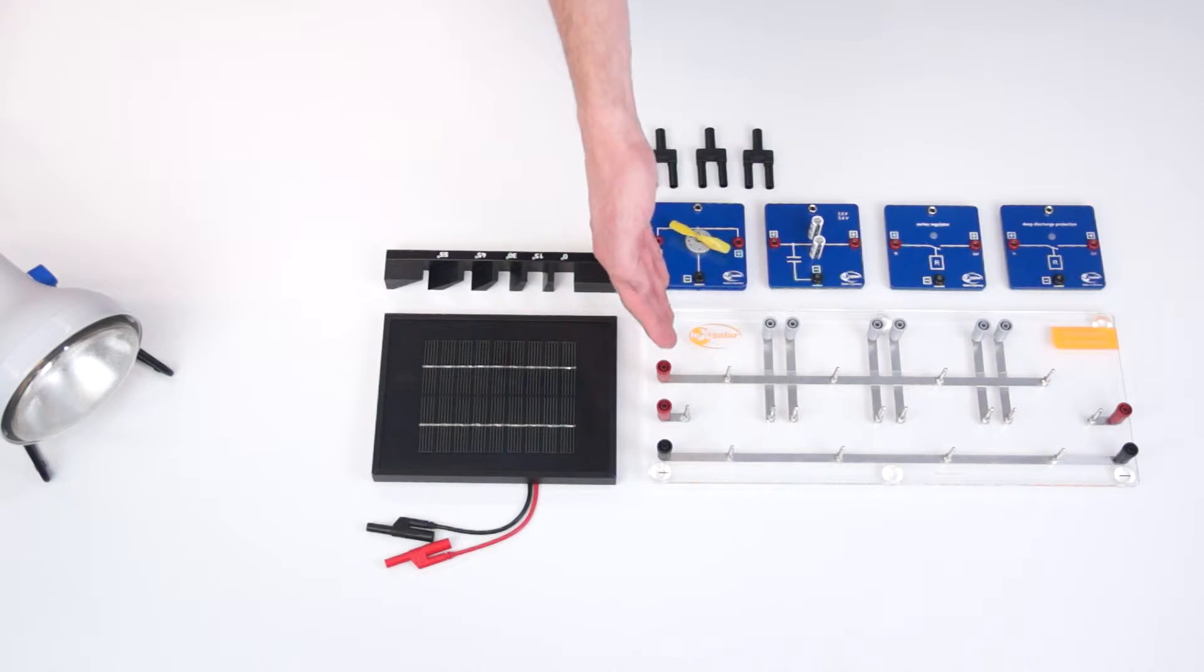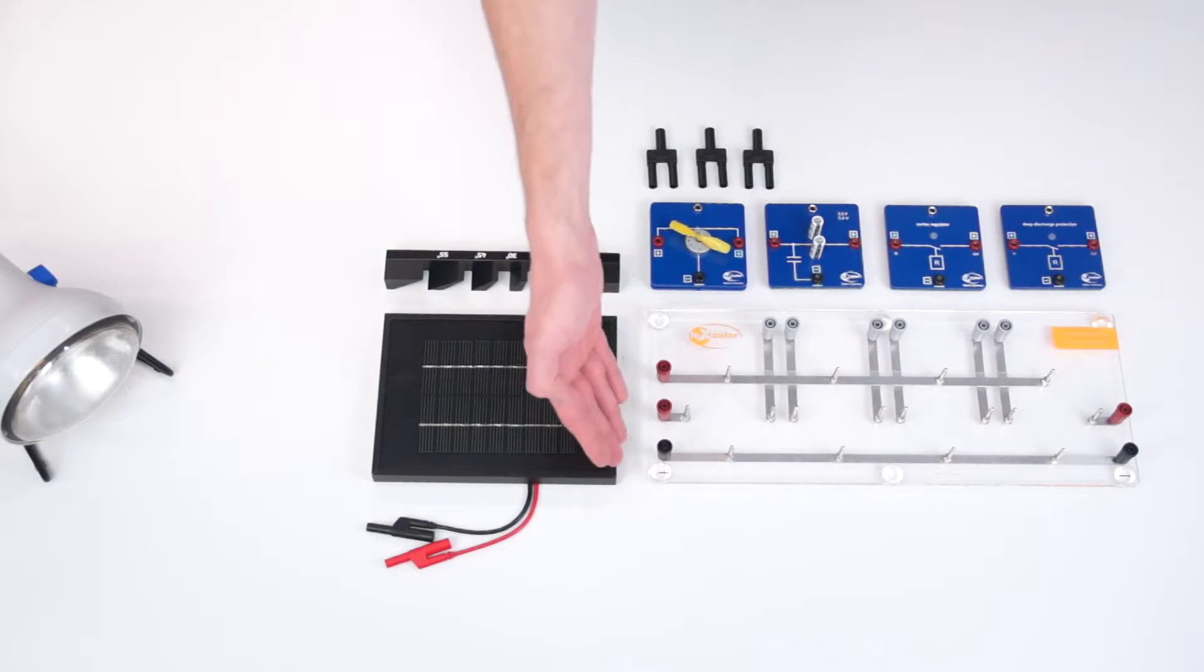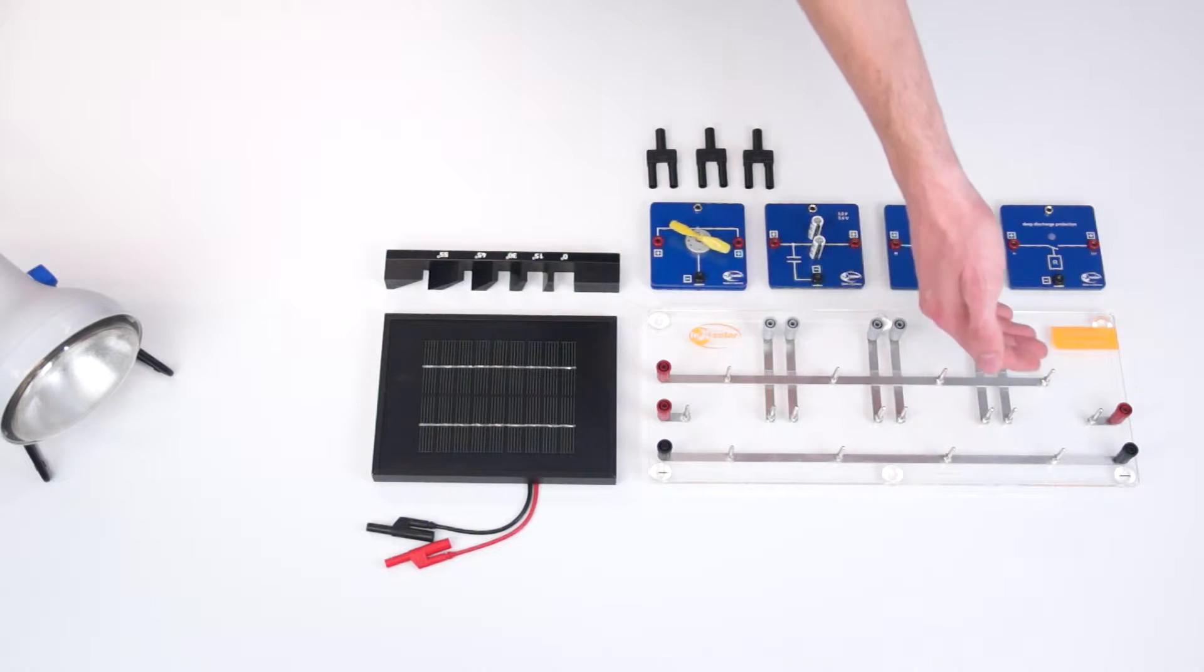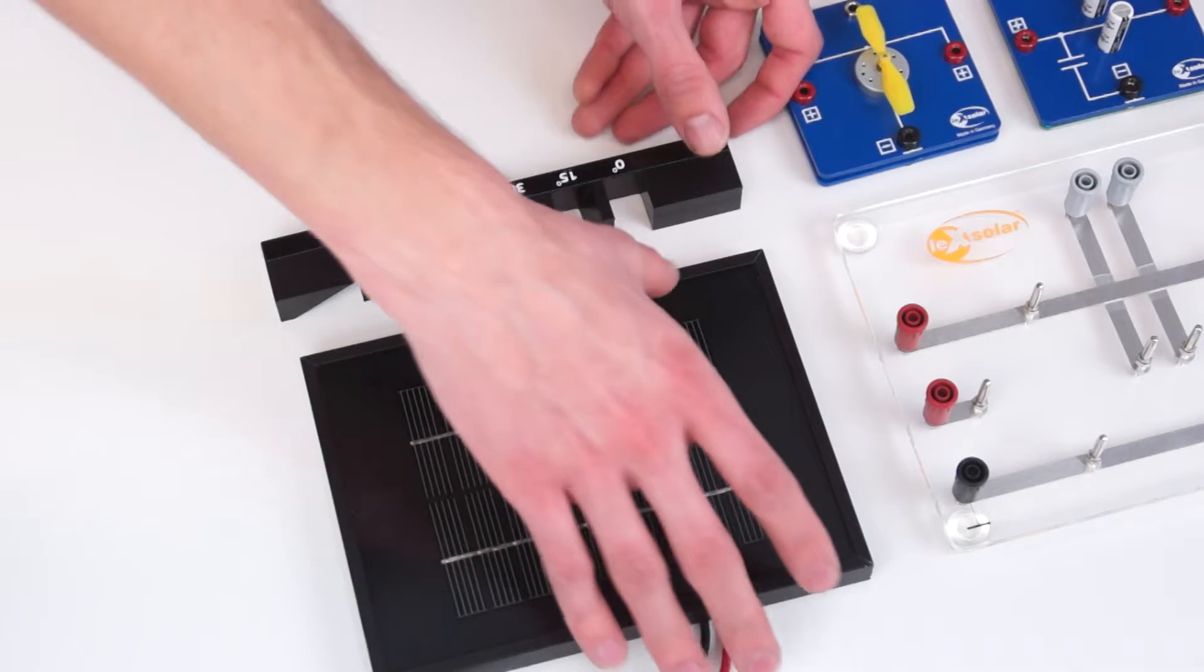First we need the base unit. It has a ground line and provides slots for up to four modules which can be connected in series or parallel. The supply element in our autarkic system will be the solar module. For the construction, we put it on its base and connect it to the base unit.